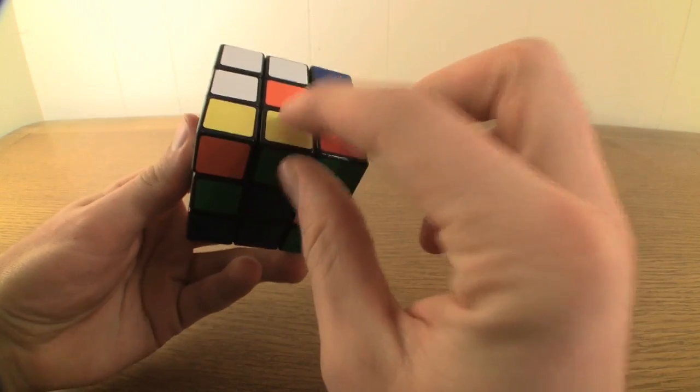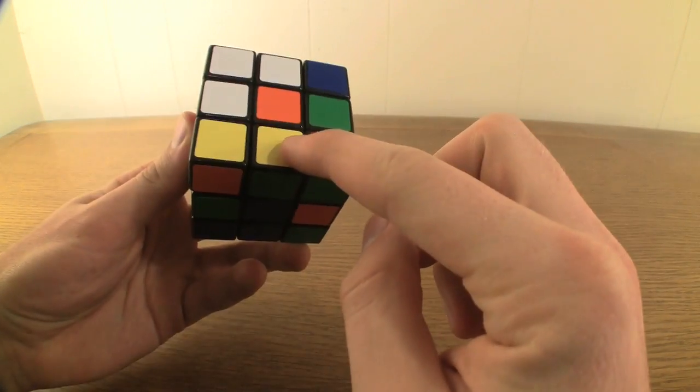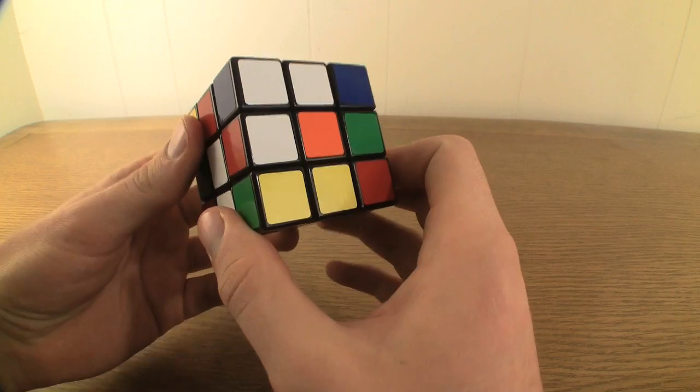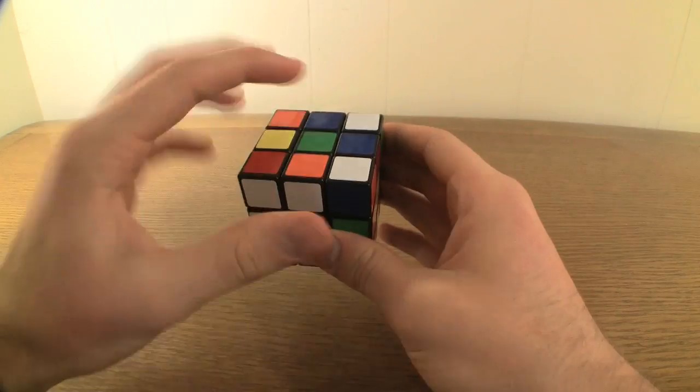Now, look at the non-green portion of the edge piece you located and take note of what color it is. Twist the down face so that your edge piece is directly underneath the center of that color.